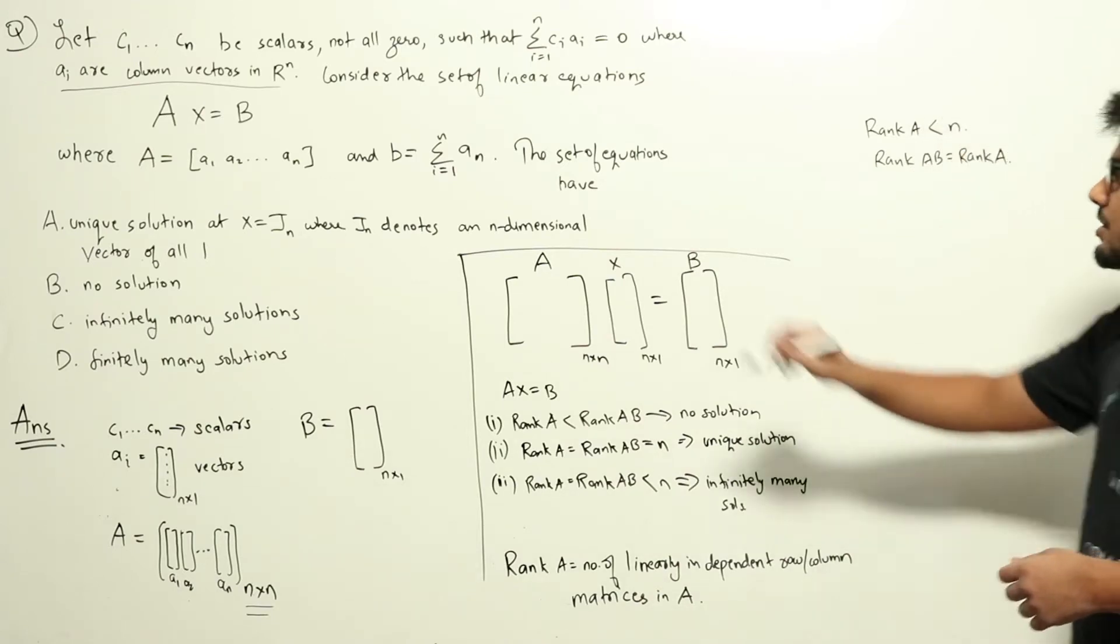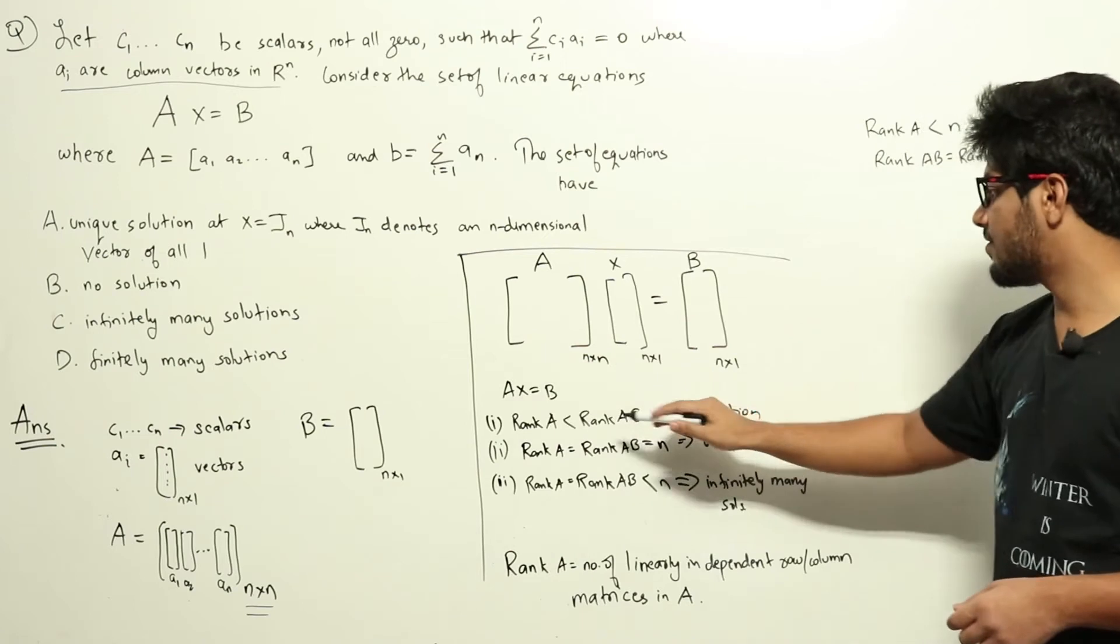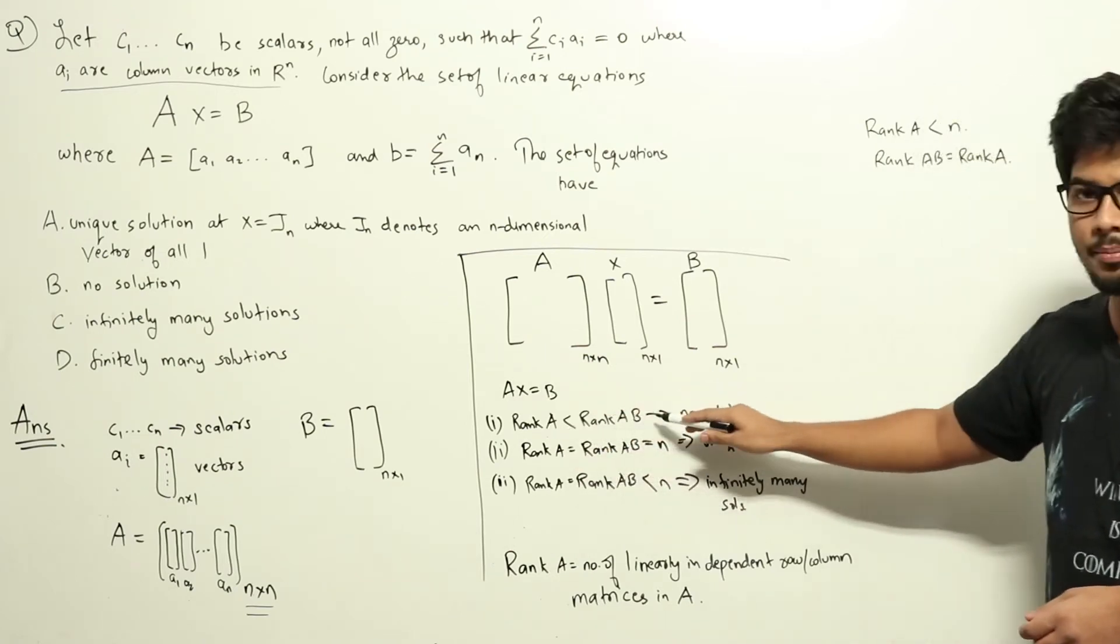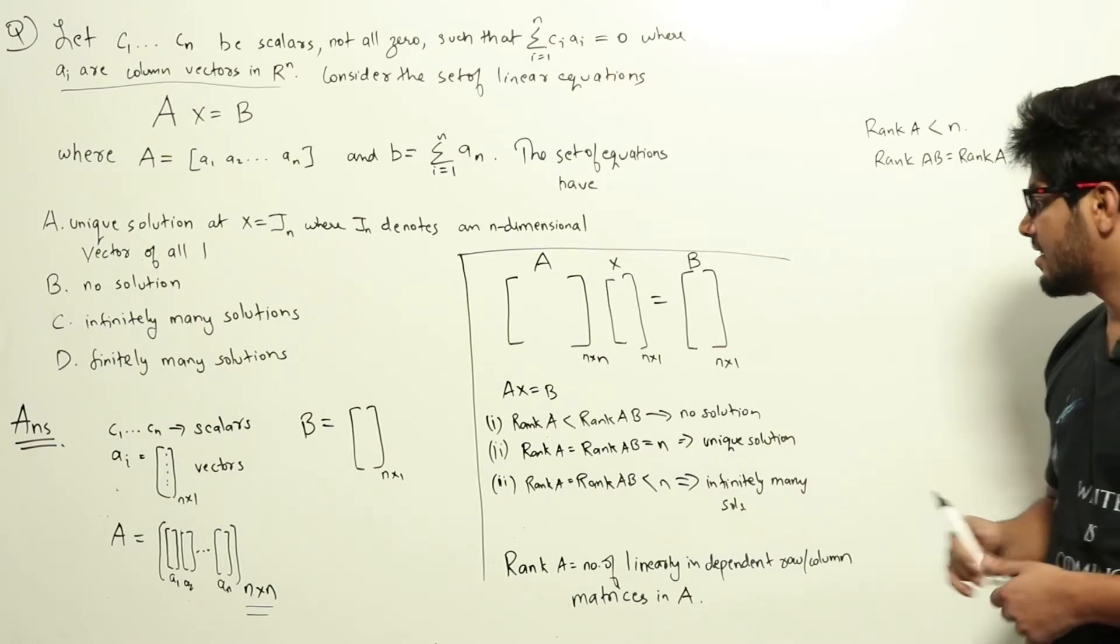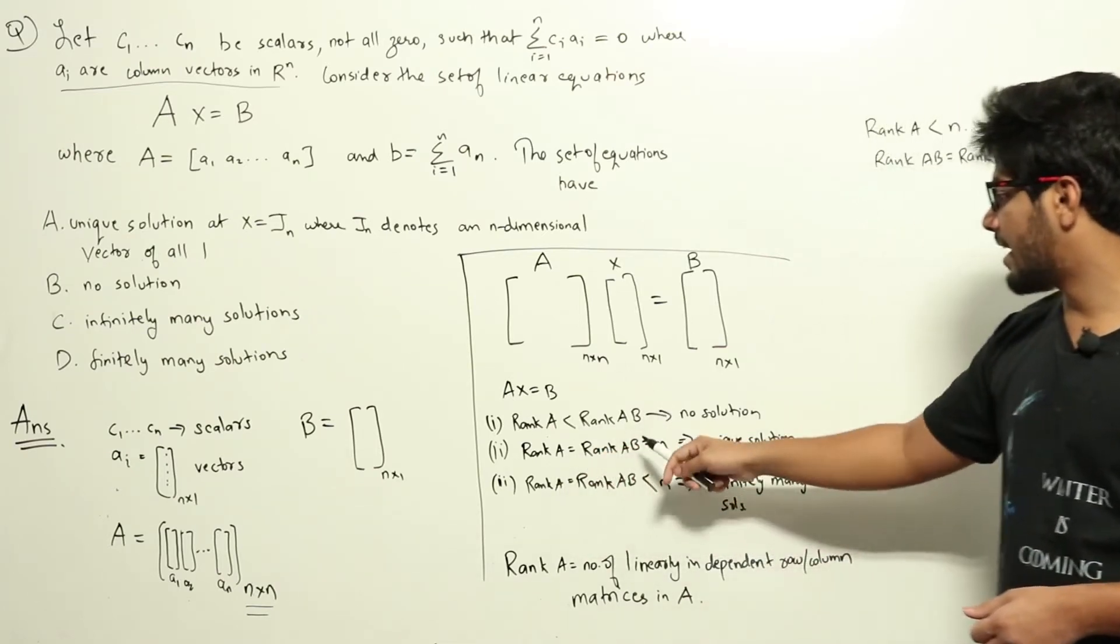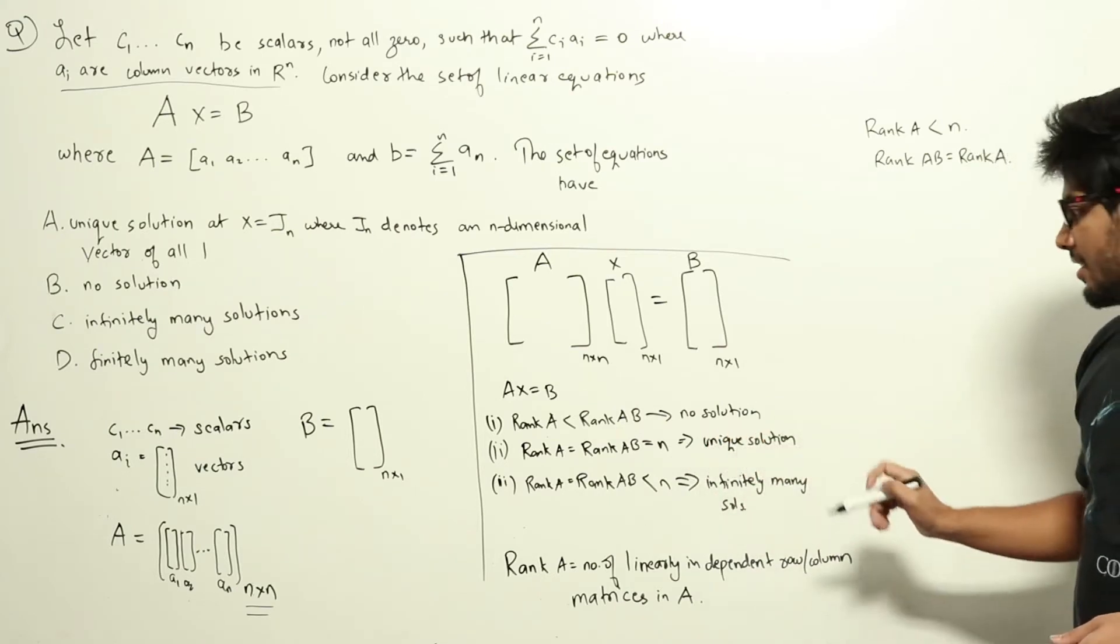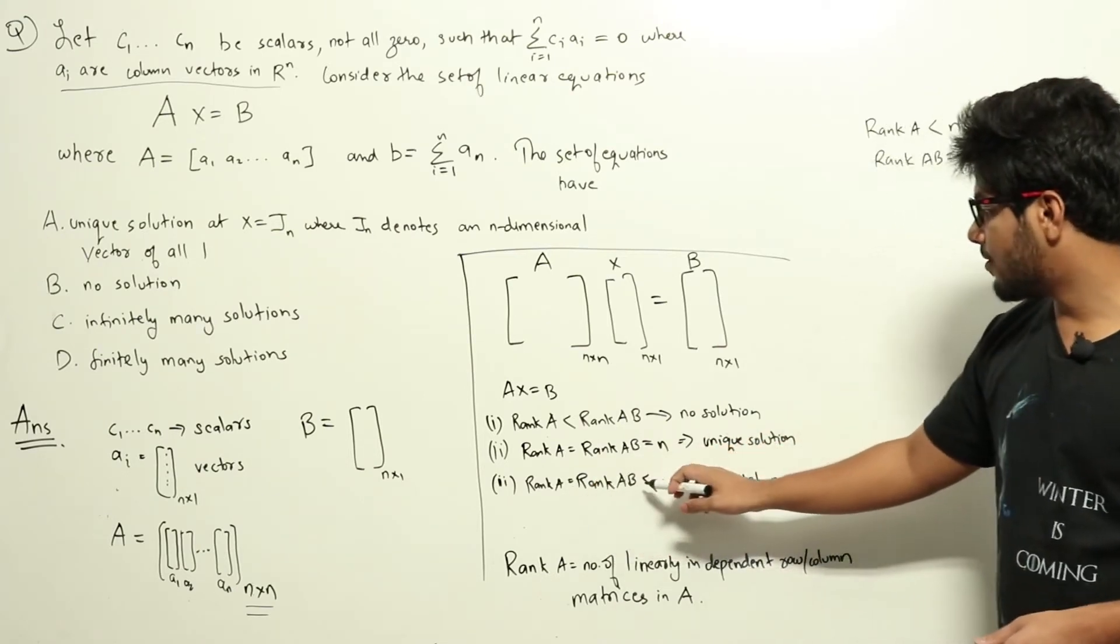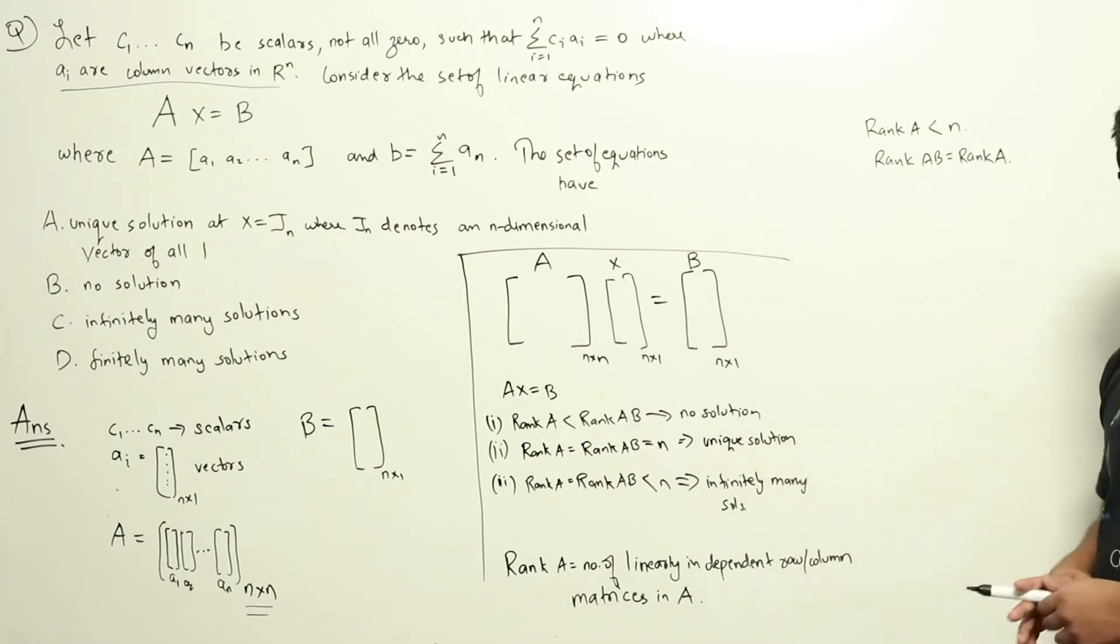Number of solutions for linear homogeneous equations like Ax equal to b: If rank of A is less than rank of Ab, there is no solution—the equations are inconsistent. If rank of A equals rank of Ab equals n, it has a unique solution. If rank of A equals rank of Ab which is less than n, there are infinitely many solutions.